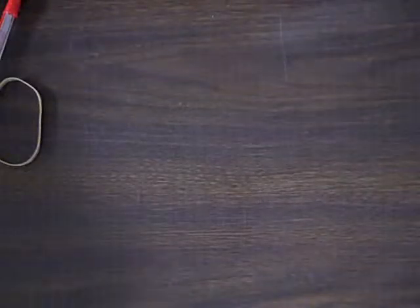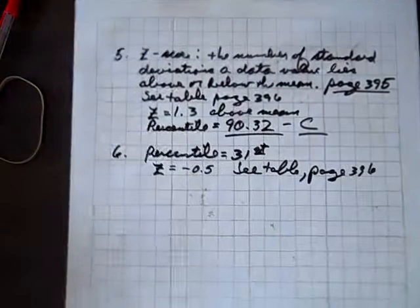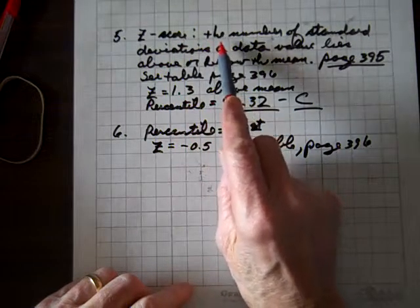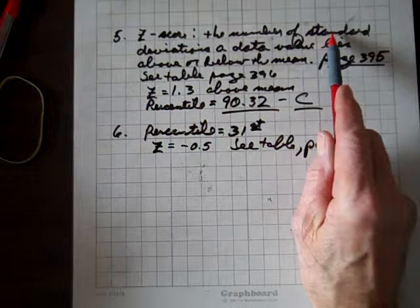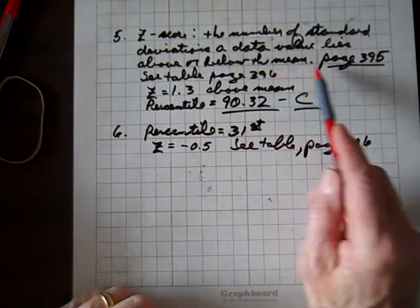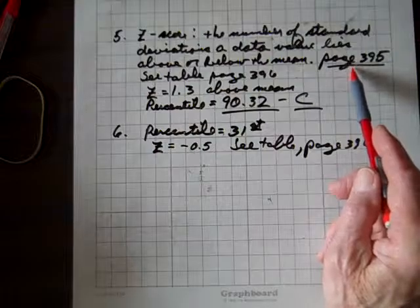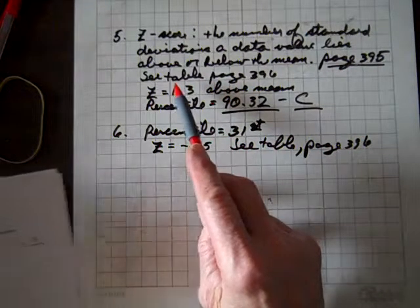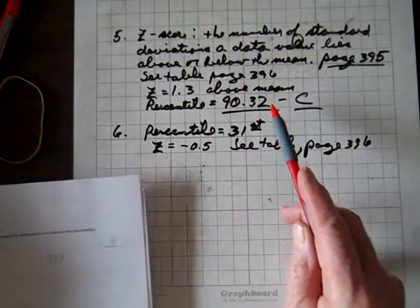Now for 5, and as I just said, the Z score, the number of standard deviations a data value lies above or below the mean, and that's on page 395. And we also have to use this table on page 396. And for 5...